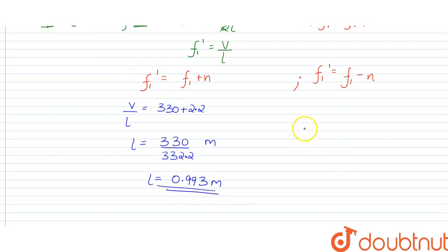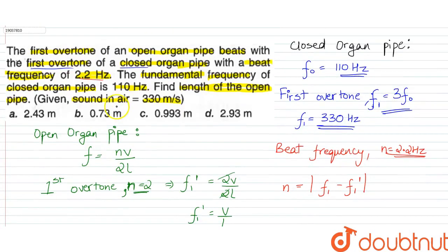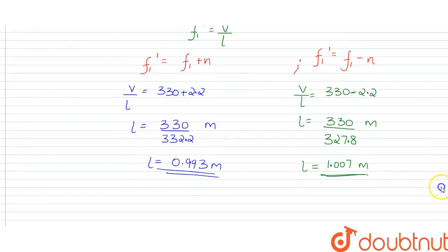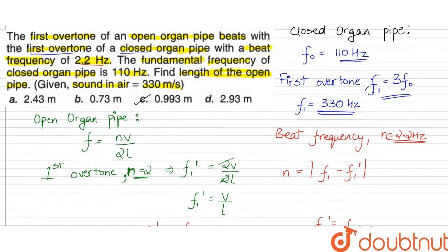Similarly, for the second case, v upon l equals 330 minus 2.2, so l equals 330 upon 327.8 meters, giving us l equals 1.007 meter. Either of these lengths is possible. Looking at our options, only one answer is valid in this case, which is option number C for the first case. So option C is the correct answer for this question.